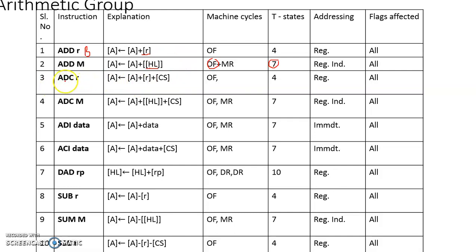ADC R is also a one-byte instruction. Upon execution, the processor identifies that all operands — the accumulator, the specified register, and the carry flag — are readily available within the processor, so the operation is performed immediately with only an opcode fetch machine cycle, requiring four T-states total. The addressing mode for the accumulator is implicit; for the register operand it is register addressing mode. For the carry status, you can also say the addressing mode is register addressing mode, as its symbol is embedded in the mnemonic. All status flags will be affected.